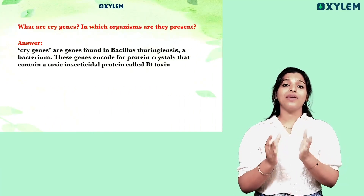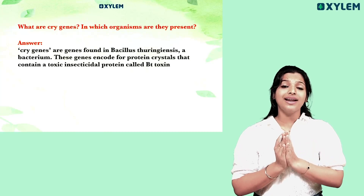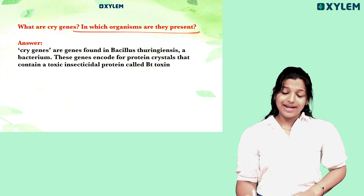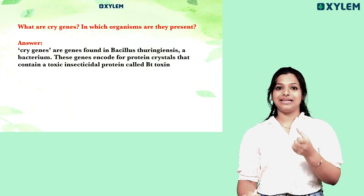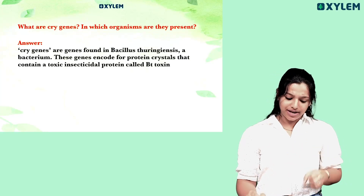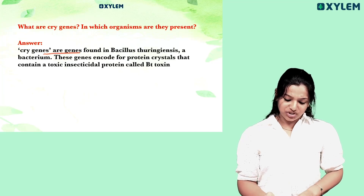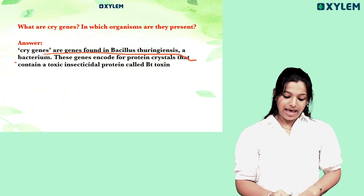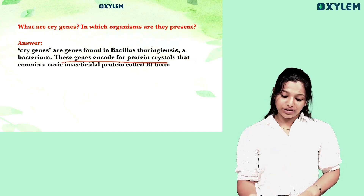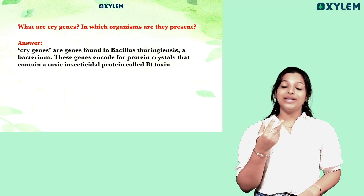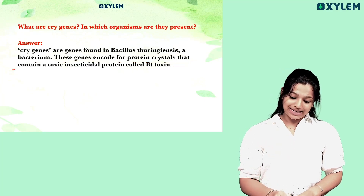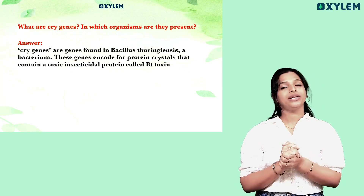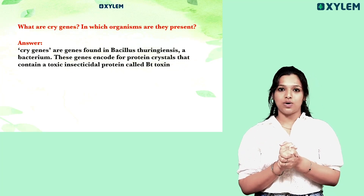What are CRY genes and in which organism are they present? CRY genes are found in Bacillus thuringiensis. These genes encode protein crystals that contain a toxic insecticidal protein called BT toxin.